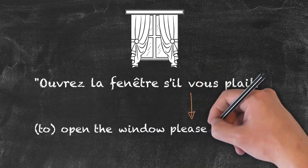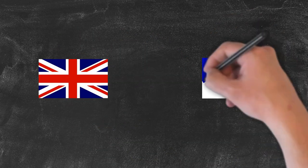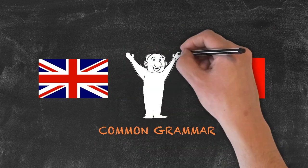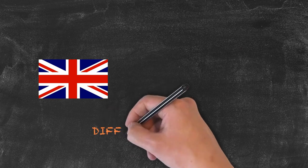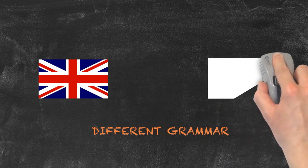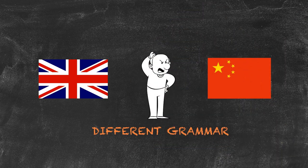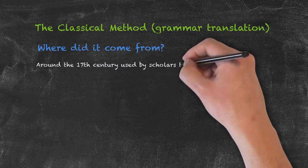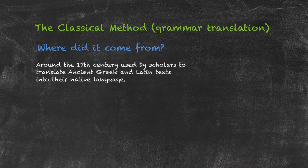This works well if the two structures being translated between L1 and L2 share a common grammar, which French and English usually do. However, one problem with the classical method is that if the grammar structures are not the same, it becomes very difficult to translate. Where did it come from? Around the 17th century, it was used by scholars to translate ancient Greek and Latin texts into their native language.